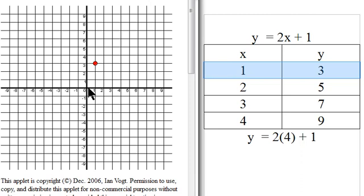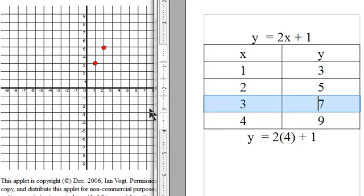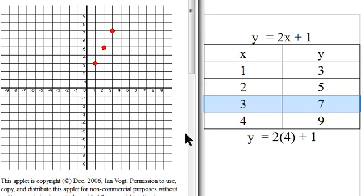2, 5 is going to be right 2 and up 5, right there. 3, 7 is going to be right 3 and up 7, right there. And then 4, 9 is going to be right 4 and up 9.